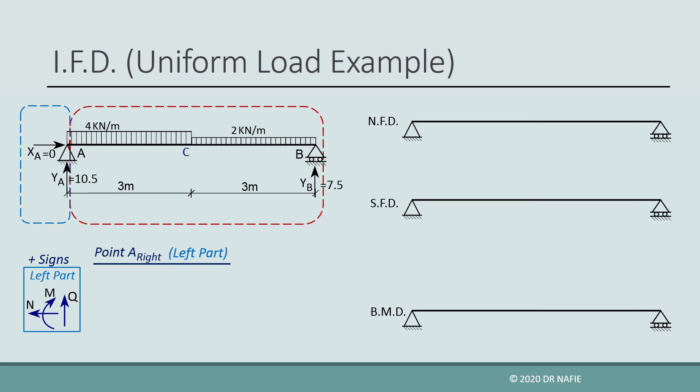Because the beam is not subjected to any horizontal force, the normal force will be zero for the whole beam. The shear force is the sum of all the vertical forces in the left part. We only have YA in the left part, which is equal to 10.5 kilonewtons, so the shear force will be positive 10.5 kilonewtons. We draw this value to scale on the shear force diagram.